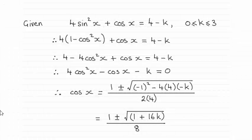Hi there. Now for this question, we were given this trigonometric equation: 4 sine squared x plus cosine x equals 4 minus k, where k lies between 0 and 3 inclusive, and asked to find cos x in terms of k. And as you can see, the answer turns out to be 1 plus or minus the root of 1 plus 16k, and then all of that is divided by 8.